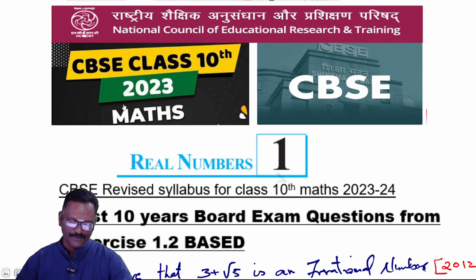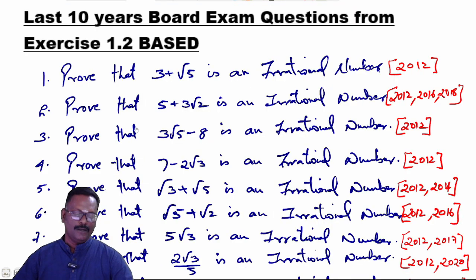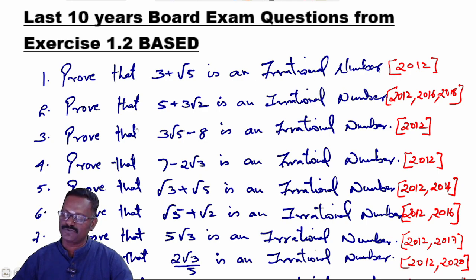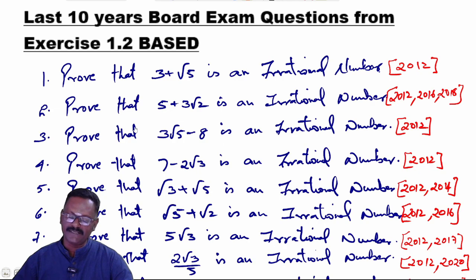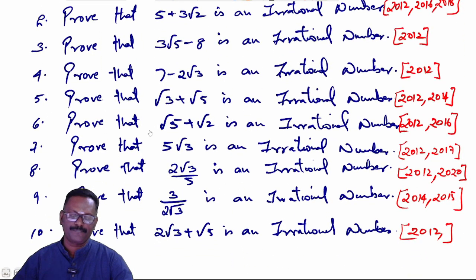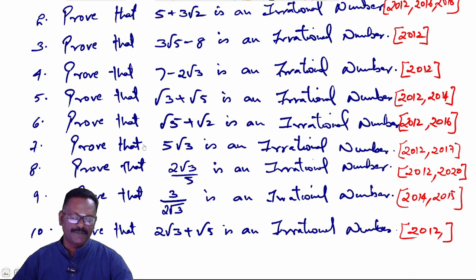First question: Prove that 3 + √5 is an irrational number. Second question: Prove that 5 + 3√2 is an irrational number — this appeared in 2012, 2016, and 2018. Third question: Prove that 3√5 − 8 is an irrational number, which appeared in 2012.